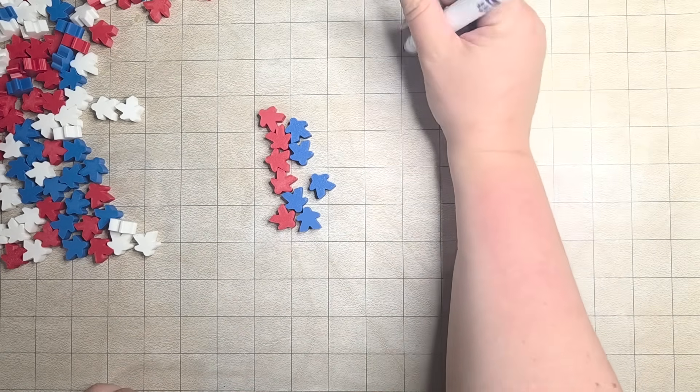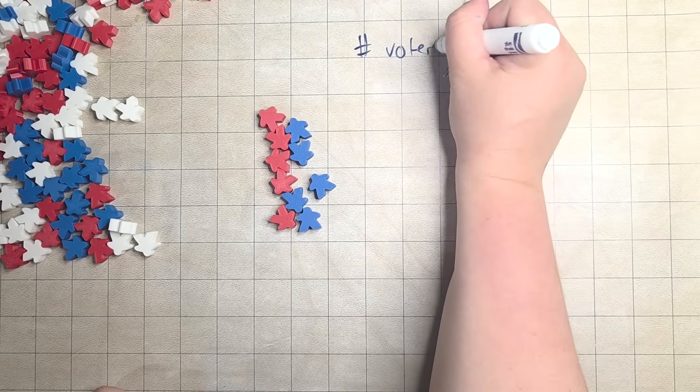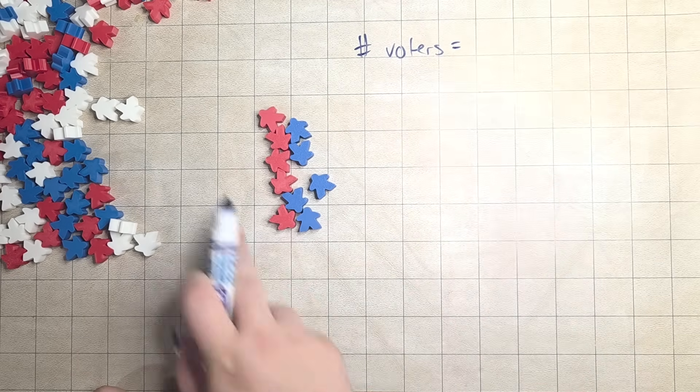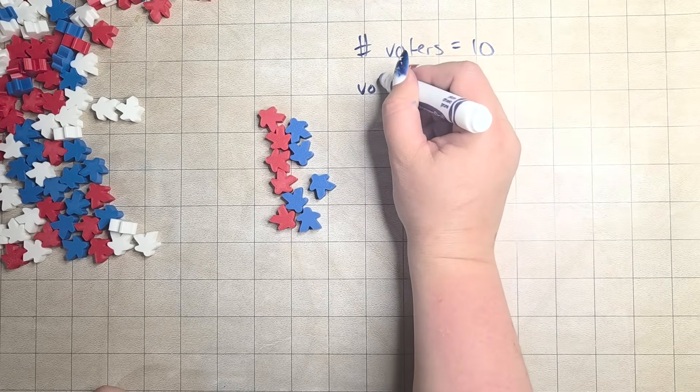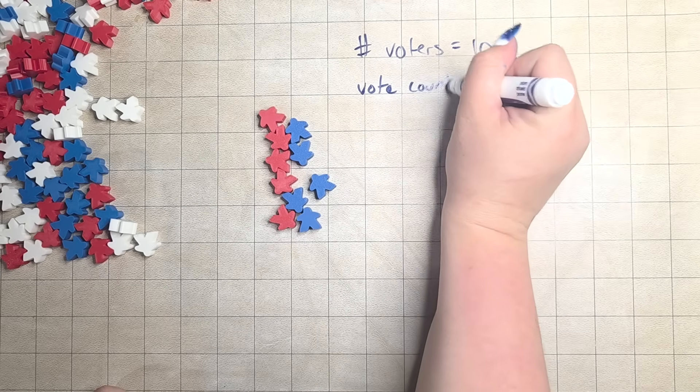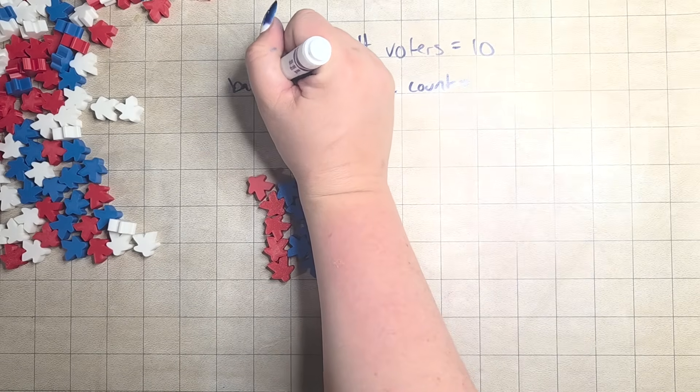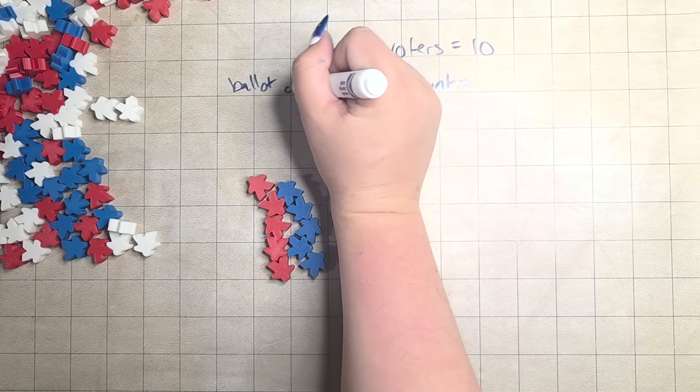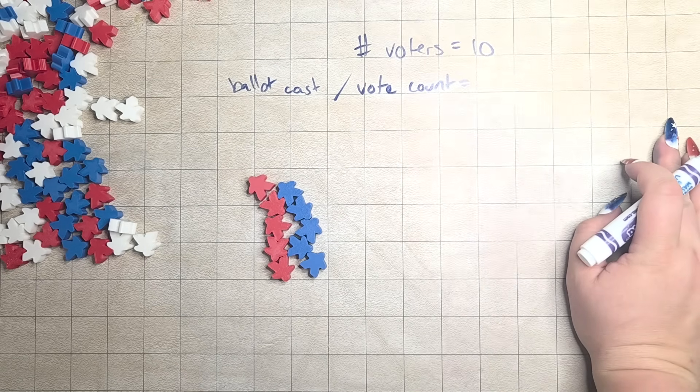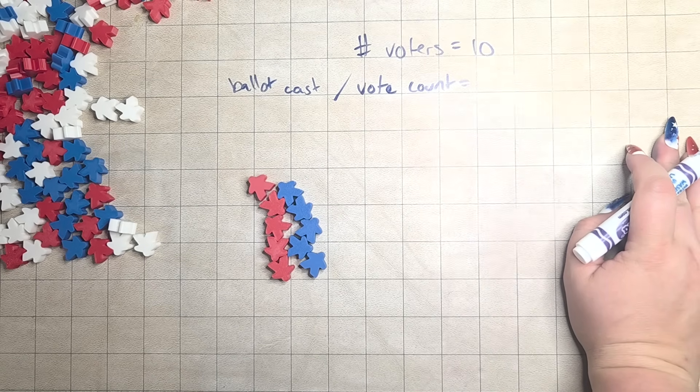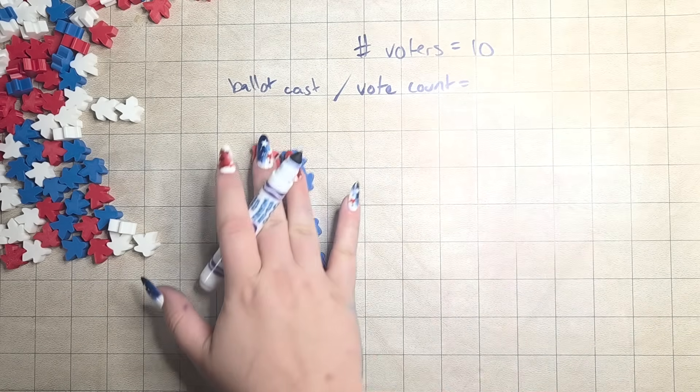And the information that we want to get out of this precinct, just as a reminder, is the number of voters, which we have 10, and then we want the vote count, or ballots cast. Vote counts and ballots can vary a little bit, because there are such things as overvotes and undervotes, which we can explain later. But to avoid overcomplicating this one, we will just say that there are 6 people who voted, and 4 who did not.